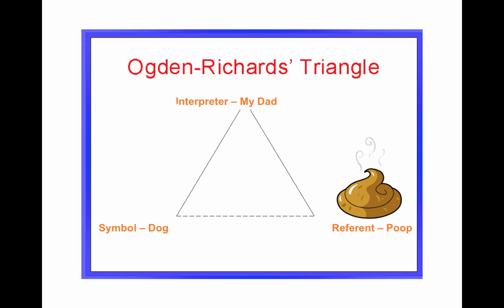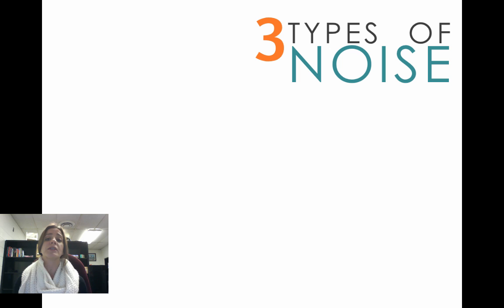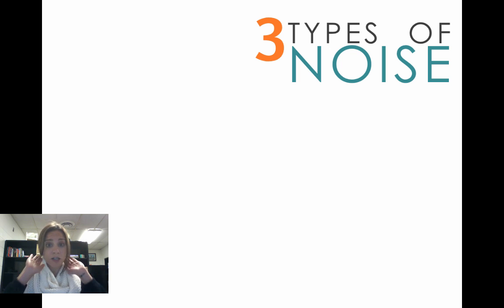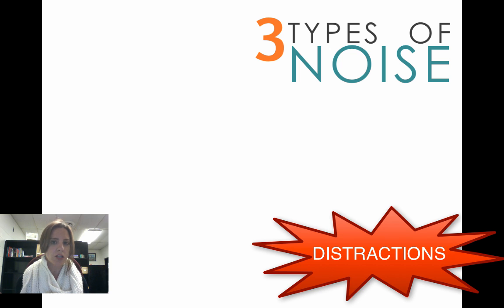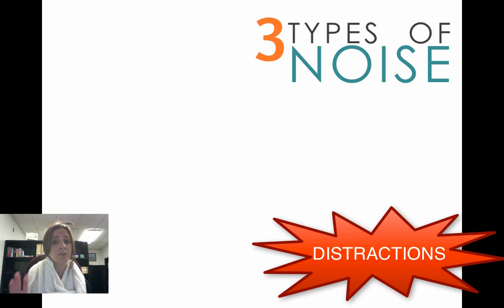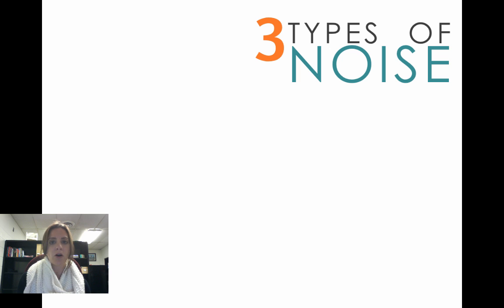You can see that the symbol did not change — the symbol stayed the same — but the referent changed depending on the interpreter. The referent is always going to depend on who the interpreter is. Along with that, I want to talk about three types of noise. When I talk about noise in this context, I'm not talking about sound noise — I'm talking about distractions that can take away from the communication.